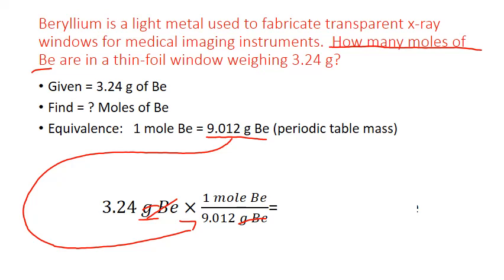One is 3.24 times 1 divided by 9.012. And that gives us 0.35952 moles of beryllium.